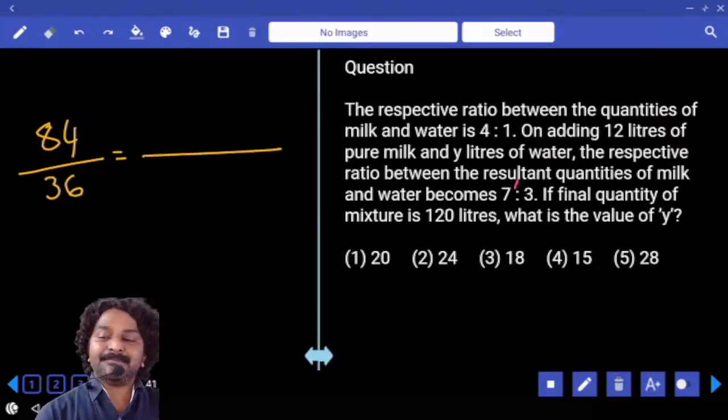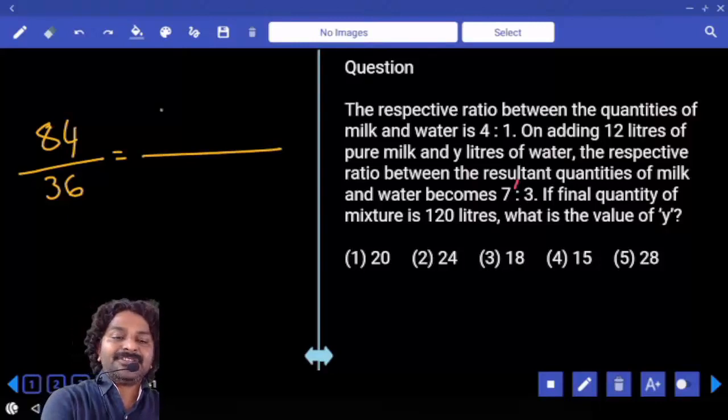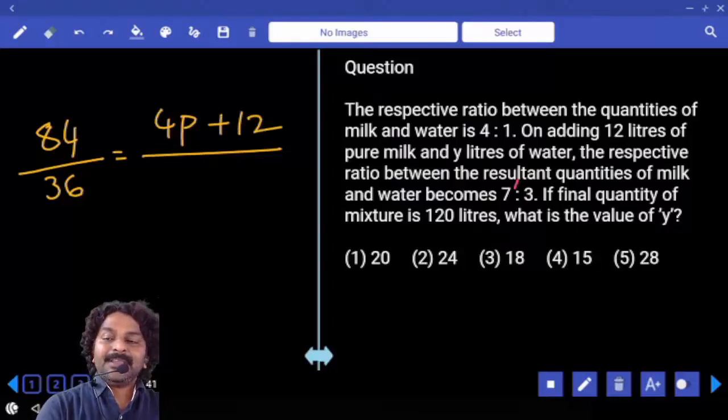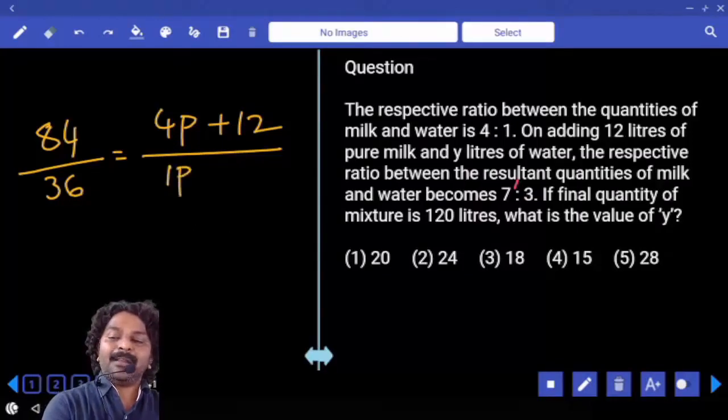Now 84 liters of milk we have, correct? Which is initial milk, 4 parts, 12 liters added. Initial water, 1 part and then y liters added.